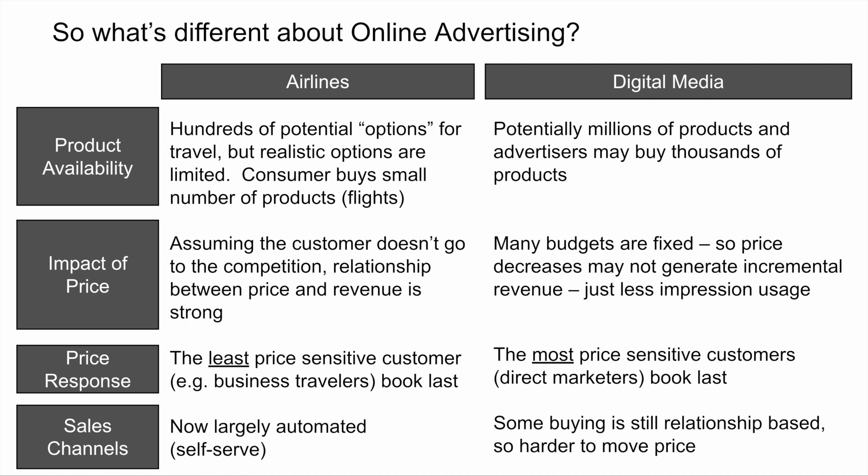A final distinction is the sales channel. Certainly around 2010 and even through 2015, airlines had moved very much toward automation, whereas much of the buying in digital media was still hand-sold by a sales team. That is less true now in 2023, but sales teams still play a significant role. And because it is relationship-based, it's significantly harder to move the price in digital media.